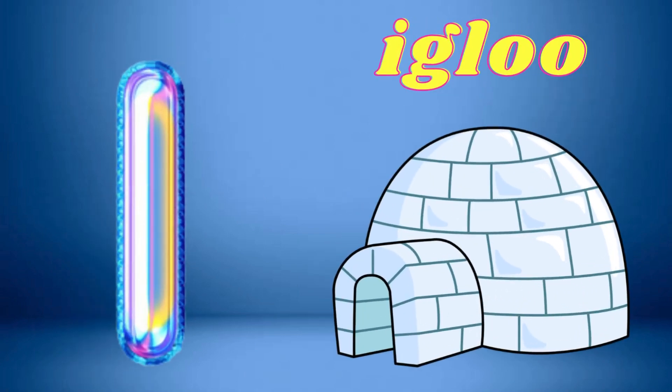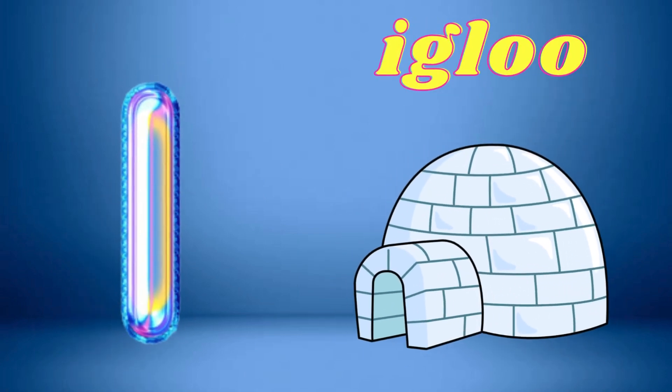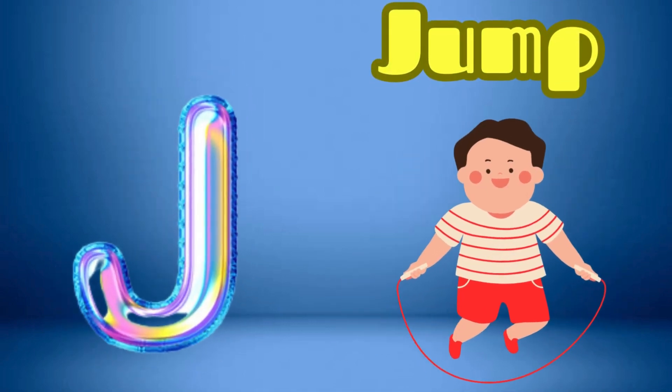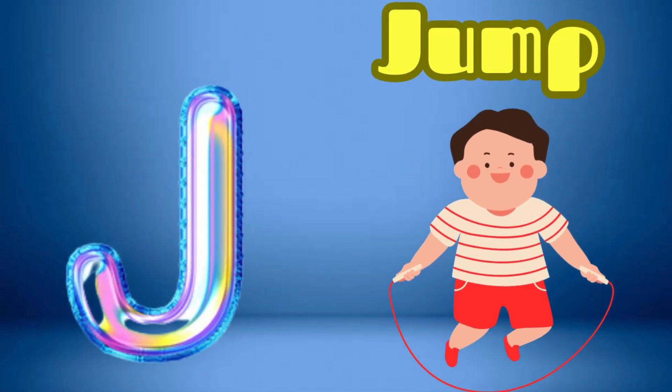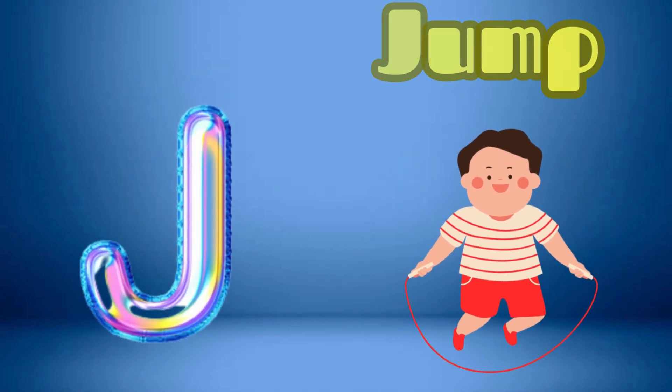I is for Igloo, I-I-Igloo. J is for Jump, J-J-Jump.